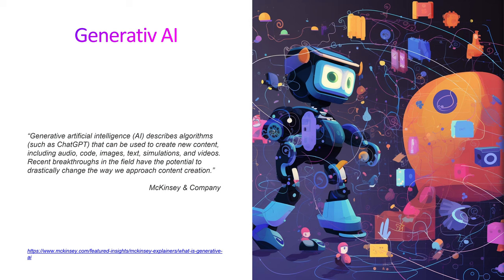A definition of generative AI — it changes based on who you talk to, but this is from McKinsey & Company, one of the biggest business consultant companies in the world. Their definition: generative artificial intelligence describes algorithms such as ChatGPT that can be used to create new content, including audio, code, images, text, simulations, and videos. Recent breakthroughs have the potential to drastically change the way we approach content creation. Personally, I'd say the definition could be a little broader — it can save the world or doom the world.